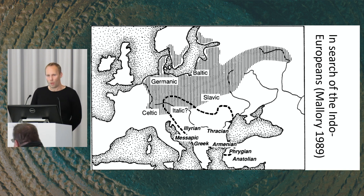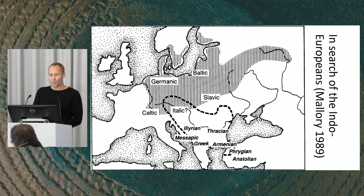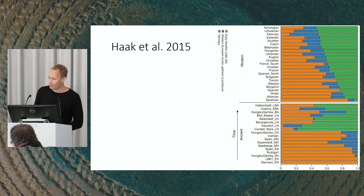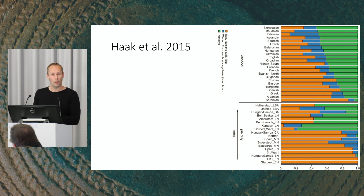The Corded Ware is intermediate between the Yamnaya steppe culture and the Indo-European languages in their historical locations. When you read Jim Mallory's classic 'In Search of the Indo-Europeans,' he projects the Indo-European languages onto the Corded Ware map and says the area where we find these languages is basically the area of the original Corded Ware. Now we have genetic substantiation of this — we know that population-wise the Corded Ware was affected by steppe populations.